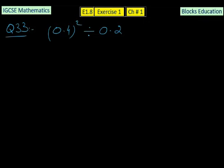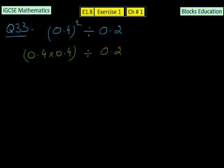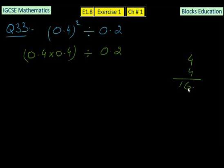In question number 33, we have (0.4)² divided by 0.2. First, let's simplify the bracket: (0.4)² means 0.4 × 0.4. To multiply these, we ignore the decimal places and compute 4 × 4 = 16. Then we count the decimal places: one plus one equals two decimal places, so the decimal moves two places to the left, giving 0.16. Therefore 0.4 × 0.4 = 0.16.